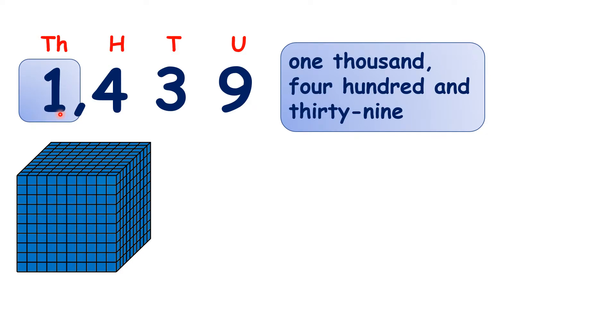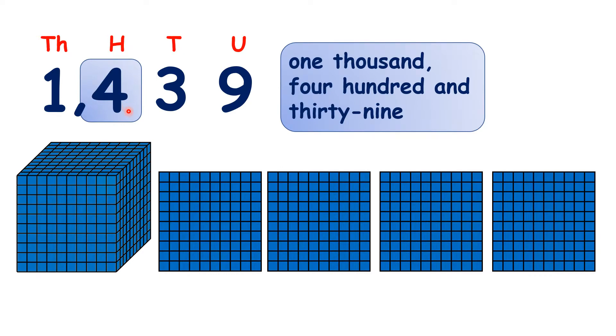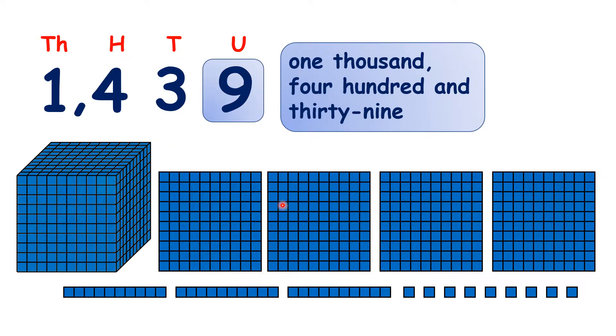So this one in our thousands place means we have one thousand, we have four hundreds, we have three tens, and we have nine units.